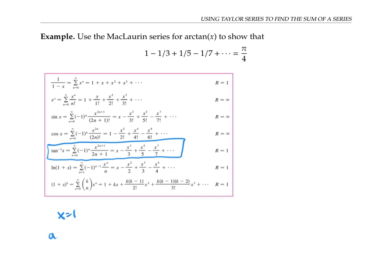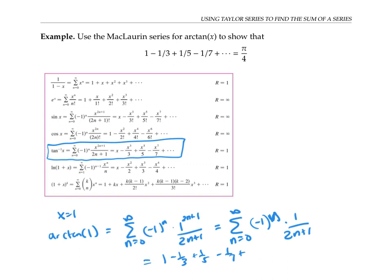In other words, arctan(1) is given by the sum from n = 0 to infinity of (-1)^n · 1^(2n+1) / (2n+1). Since 1 to any power is just 1, this can be written as the sum from 0 to infinity of (-1)^n / (2n+1). Or if we write it out in terms, we get 1 - 1/3 + 1/5 - 1/7 and so on, which is exactly the series we're trying to add up.